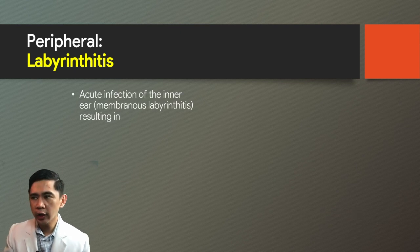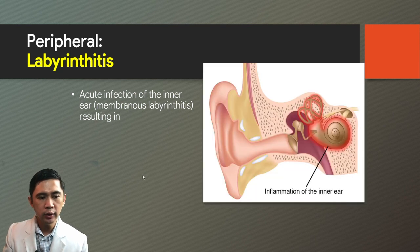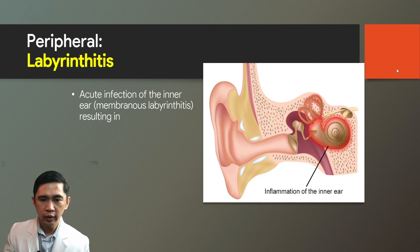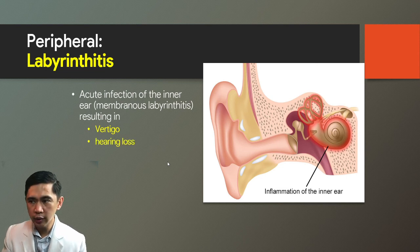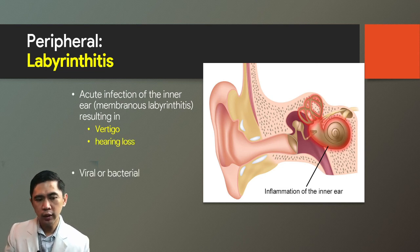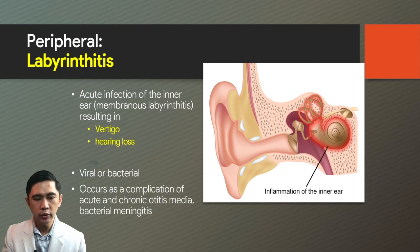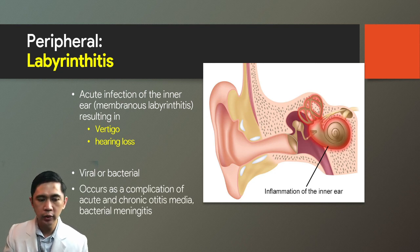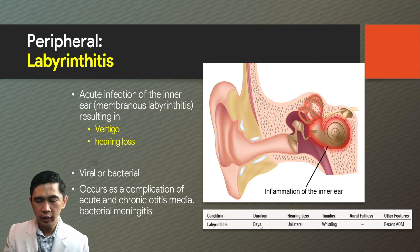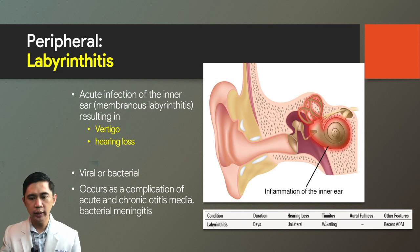Labyrinthitis is an acute infection of the whole inner ear—sometimes called membranous labyrinthitis—resulting in inflammation of the entire labyrinth, which includes both the vestibular and cochlear systems. Therefore, there will be both vertigo and hearing loss. The cause can be viral or bacterial, and it typically occurs as a complication of acute or chronic otitis media or bacterial meningitis. Duration is usually days; associated features include hearing loss, tinnitus, and a history of recent acute otitis media.